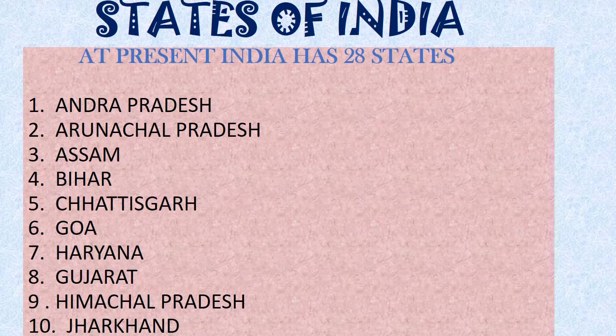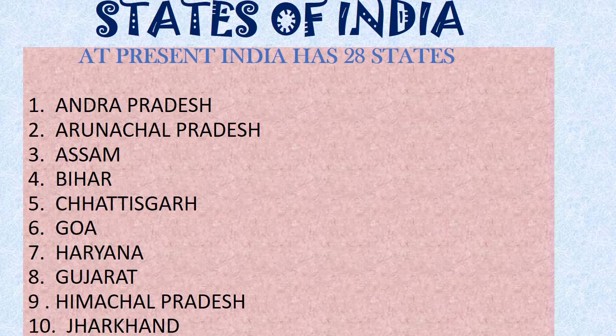At present, India has 28 states. What are they? Andhra Pradesh, Arunachal Pradesh, Assam, Bihar, Chhattisgarh, Goa, Haryana, Gujarat, Himachal Pradesh, Jharkhand. These are the first 10 states.